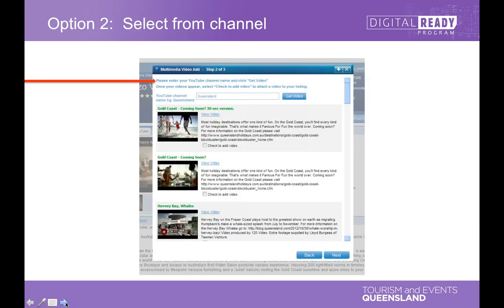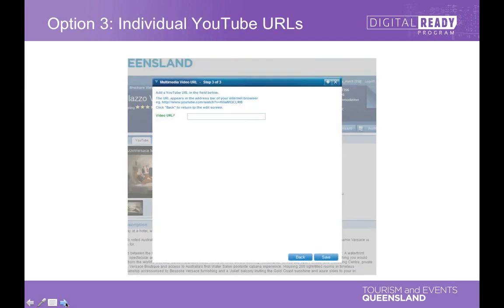The first option is to add your whole channel — everything on your channel — which is probably the easiest way to go, particularly if you've kept your channel nice and tidy with good content. You just put in your YouTube channel URL and it goes and finds it, and you verify it's yours. Option two is to put in your channel but opt in to specific videos you want to add — you can select individual ones, which is useful if you have date-specific content that's no longer appropriate. And of course you can also just upload individual YouTube URLs by copying and pasting the URL that appears when you're playing a particular video. Please put some video on there because consumers absolutely love it.